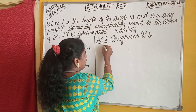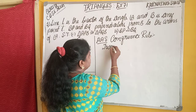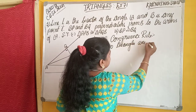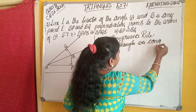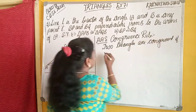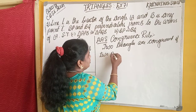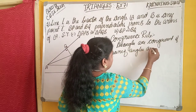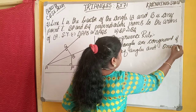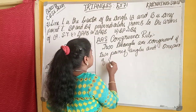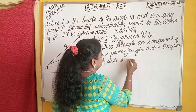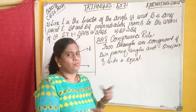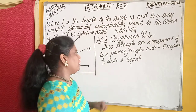Two triangles are congruent. The AAS congruency rule states that two triangles are congruent if two pairs of angles and one pair of sides are equal. We can say that two triangles are congruent if any two pairs of angles of a triangle and a pair of sides are equal.